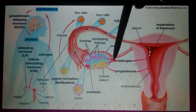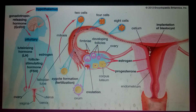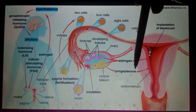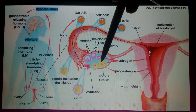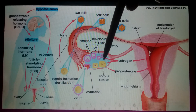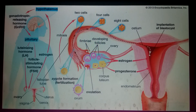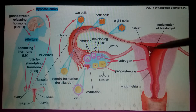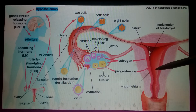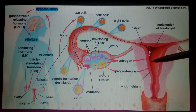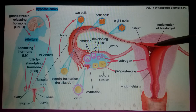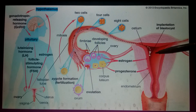The progesterone produced by the corpus luteum also affects estrogen levels. When the corpus luteum is formed from the ruptured follicle, it produces progesterone that helps maintain the luteal phase. In the luteal phase, the endometrium — the inner lining of the uterus — becomes thick to prepare for implantation of the embryo.